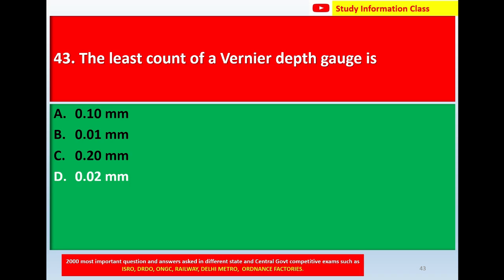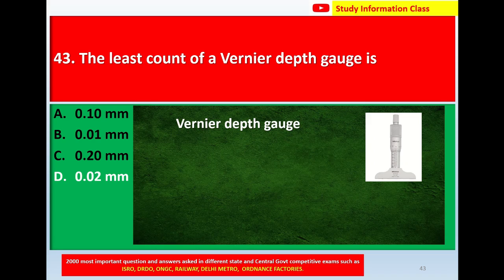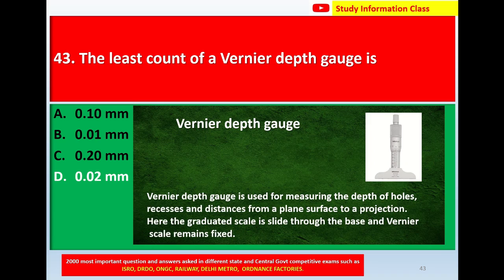For this question, the correct answer is 0.02 mm. A vernier depth gauge is used for measuring the depth of holes, recesses, and distances from a plane surface to a projection. The graduated scale slides through the base and the vernier scale remains fixed. For question number 43, the least count of a vernier depth gauge is 0.02 mm.